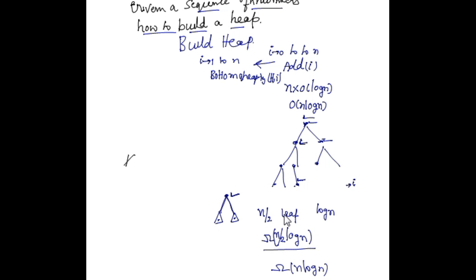We assume that before you come to this node, both subtrees satisfy the heap property — all nodes in the left subtree and all nodes in the right subtree. Now I take this node and call the top-down heapify function from this node, which will ensure the entire subtree satisfies the heap property. So for all the leaf nodes, I do not have to do anything. I start in the reverse direction and instead of calling bottom-up heapify, I call top-down heapify.